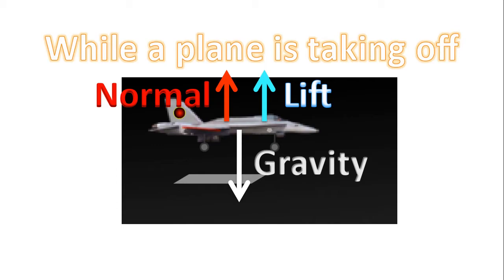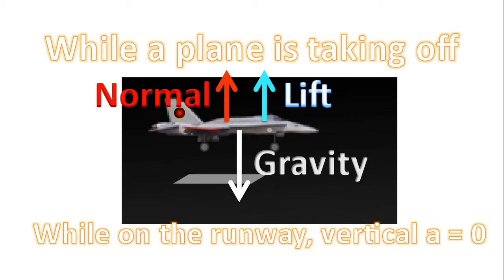So while a plane is taking off, there are three forces at work: the normal force, lift force, and gravity. While on the runway, the vertical acceleration is zero. So while the plane is still in contact with the runway, there is no acceleration in the up-down direction.